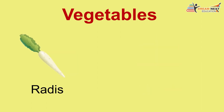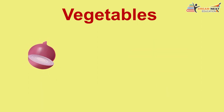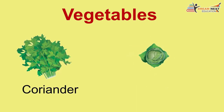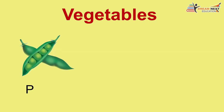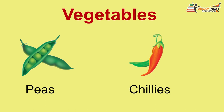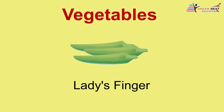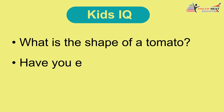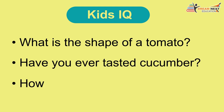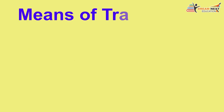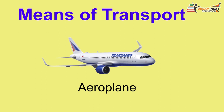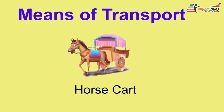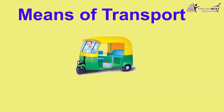Vegetables: 1. Potato, 2. Tomato, 3. Radish, 4. Brinjal, 5. Onion, 6. Ginger, 7. Coriander, 8. Cabbage, 9. Peas, 10. Chilies, 11. Ladies finger, 12. Cucumber. Kids IQ: What is the shape of a tomato? Have you ever tasted cucumber? How does it taste?